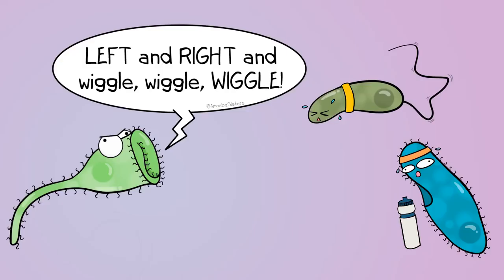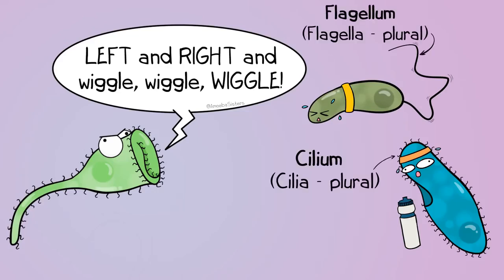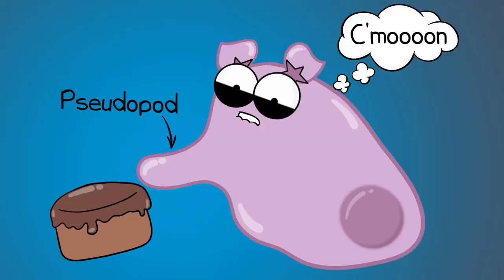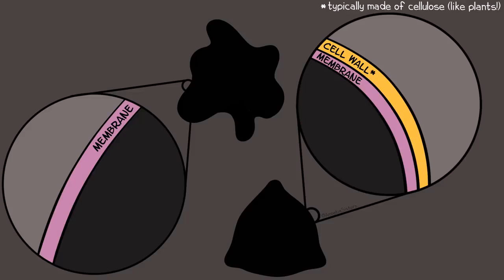Many protists can move, and if you're curious about how they do their locomotion, they might have flagella or cilia, or in the case of an amoeba, they might move around by extending their pseudopods. Some protist cells are animal-like, where they won't typically have cell walls, while others are plant- or fungus-like, where you will see a cell wall.